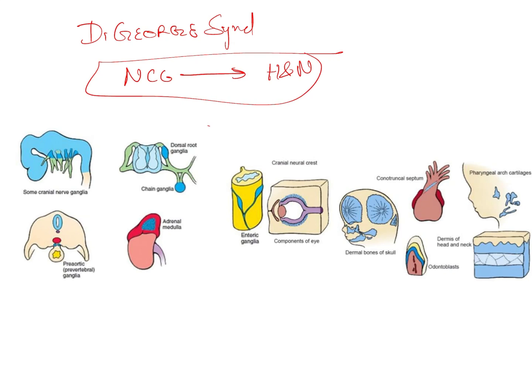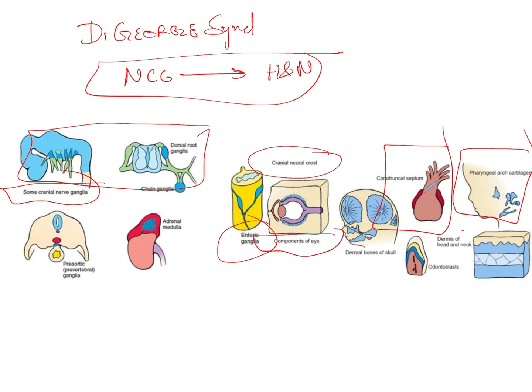There will be problems with the peripheral nervous system, secondary mesenchyme, aortopulmonary septum, dermis of the head and neck, and odontoblasts. You will have problems in the chain ganglia, cranial nerve ganglia, and cranial neural crest cells affecting components of the eye and enteric ganglia. There will be problems with bones of the skull, pharyngeal arch cartilage, and the aortopulmonary